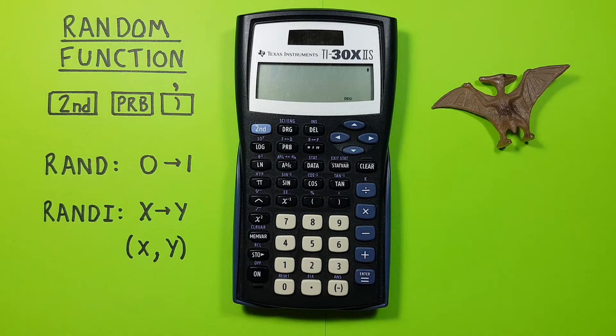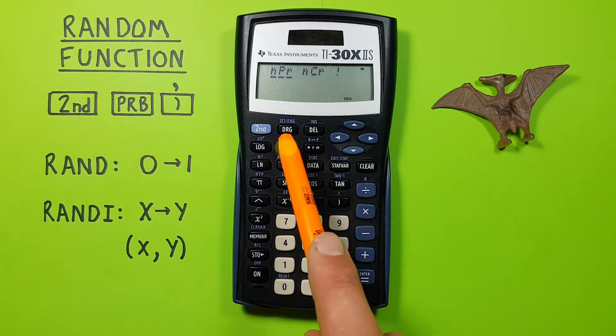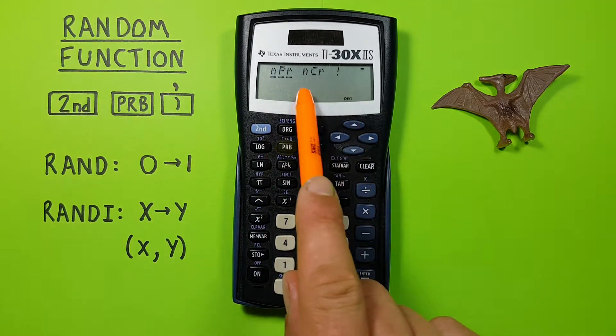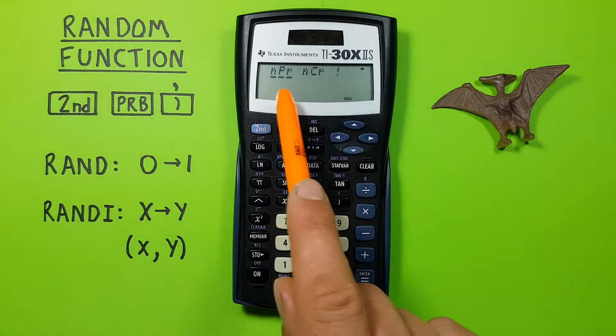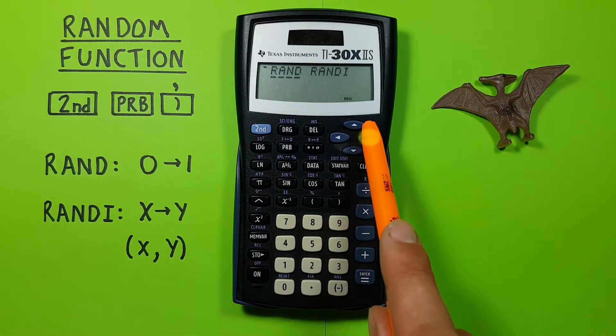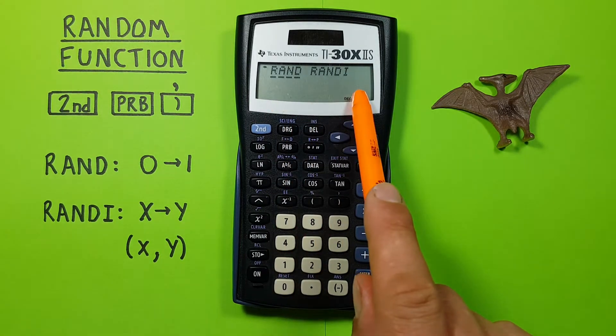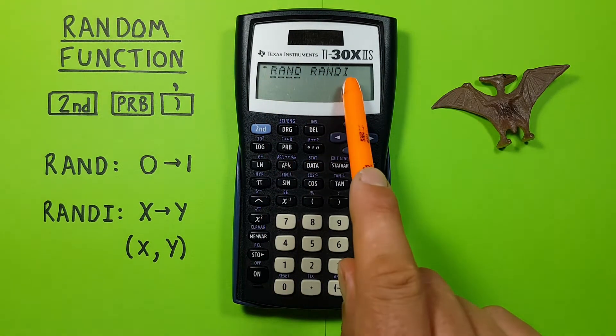To get to the random function menu we press the PRB key which will bring us to this menu. And now if we scroll to the right three times or the left once, we see this menu here. RAND and RANDI.